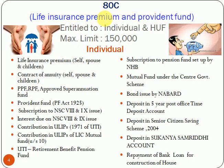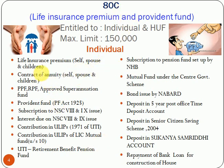Our first deduction is under Section 80C — for life insurance premium and provident fund. The assessee entitled to this deduction is an individual or HUF. The maximum limit of the deduction under 80C is Rs. 1,50,000. For individuals, the deductions under 80C cover the following investments, such as life insurance premium for self, spouse, or children.